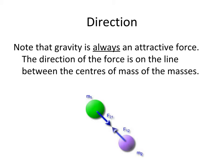Now gravity is always an attractive force. So the direction of the force is on a line that connects the two centers of masses in question. So here we can see that the force of gravity is in a straight line like so. And you can see the arrows indicate that it's an attractive force between those two objects.